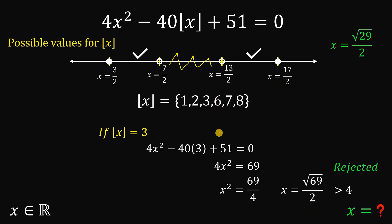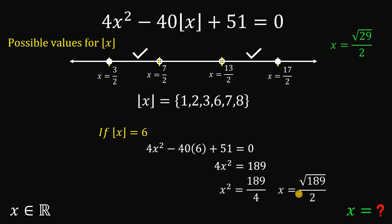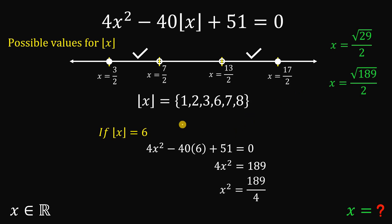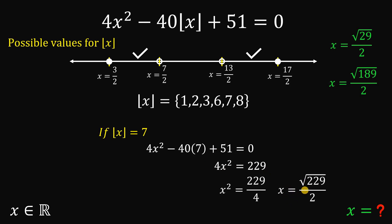Fourth case: the floor value of x equals 6. We have 4x squared minus 40 times 6 plus 51 equals 0. Simplifying, 4x squared equals 189. Dividing and taking the square root, x equals square root of 189 over 2, approximately equal to 6.8. Since 6.8 is between 6.5 and 8.5, this is our second real value for x. Fifth case: the floor value of x equals 7. We get 4x squared equals 229, so x equals square root of 229 over 2, approximately 7.6 — our third real value for x.